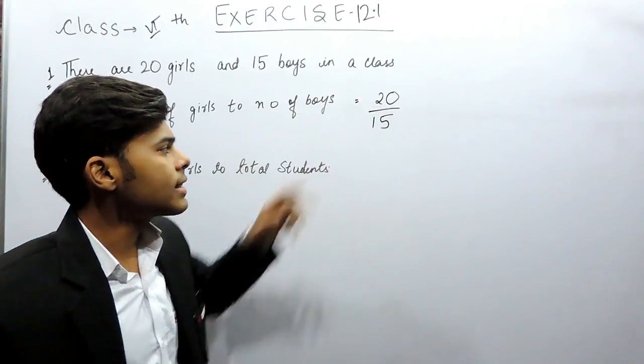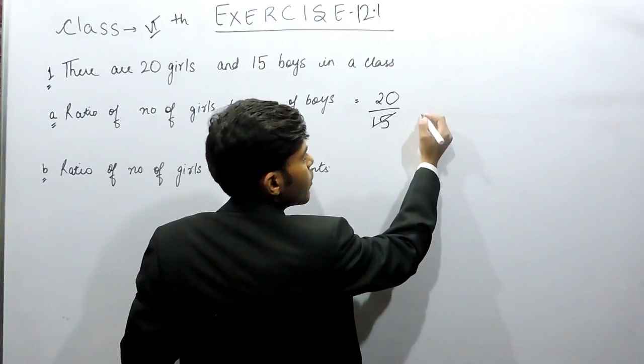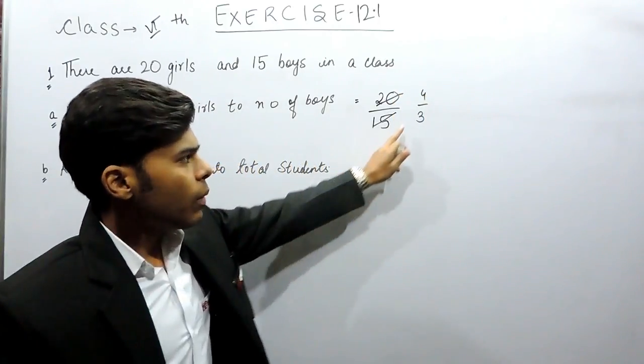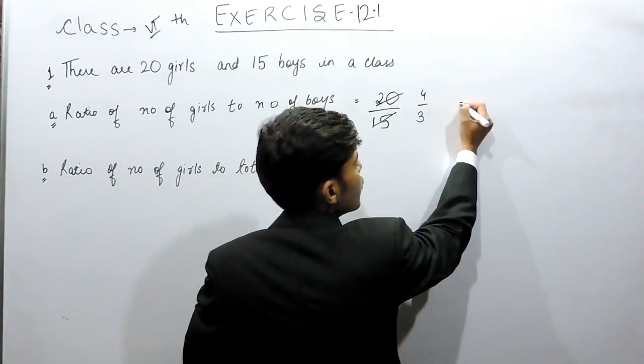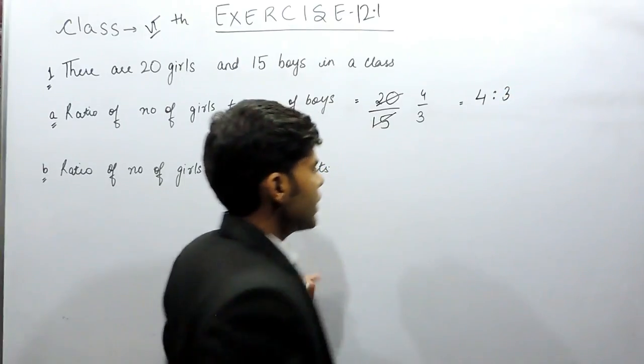So it is not in its simplest form. So first of all, we'll make it in its simplest form by three times five, four times. So now we'll write it as four, this becomes ratio four ratio three.